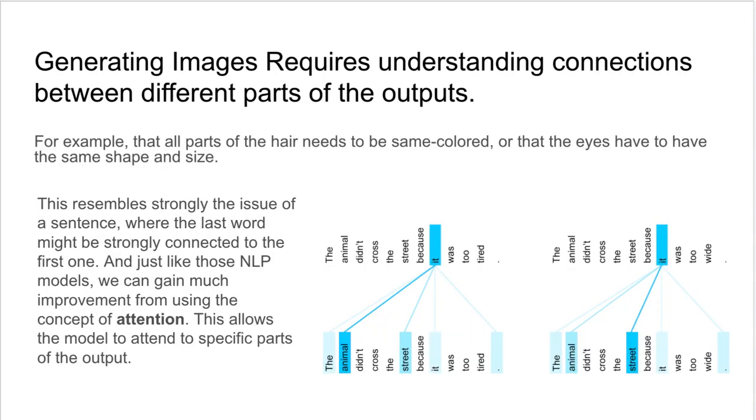Now, generating images requires understanding of connections between different parts of the output. For example, that all parts of the hair need to be same colored, or that the eyes must have the same shape and size. This resembles strongly the issue of a sentence, where the last word might be strongly connected to the first one. And just like those NLP models, we can gain much improvement from using the concept of attention. This allows the model to attend to specific parts of the output.